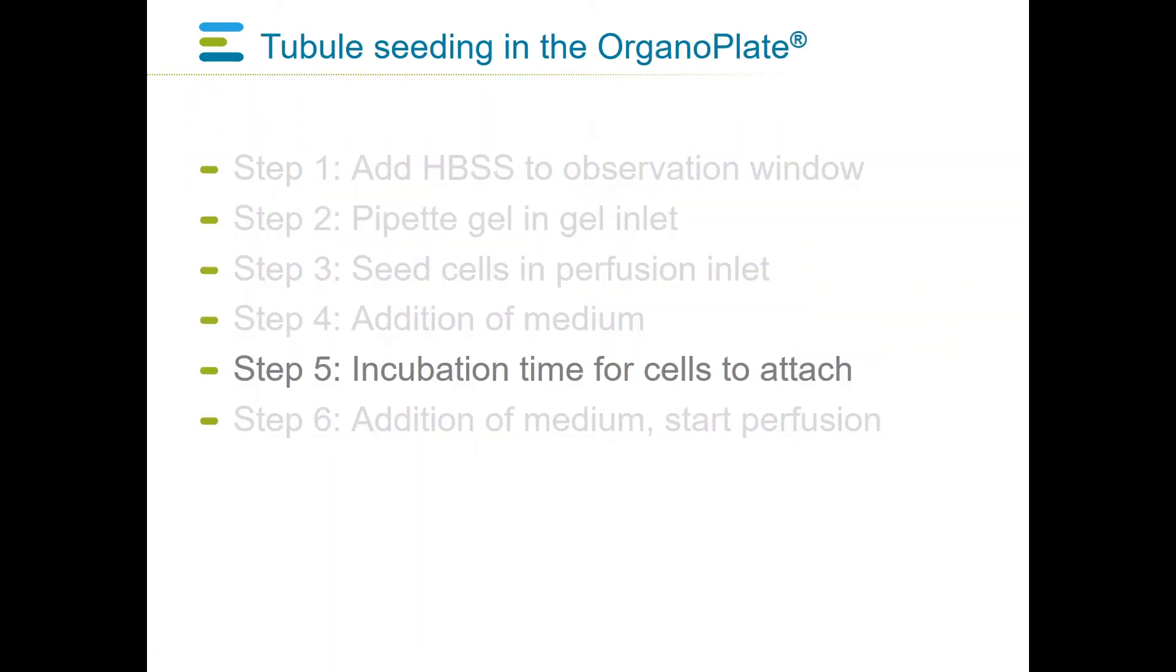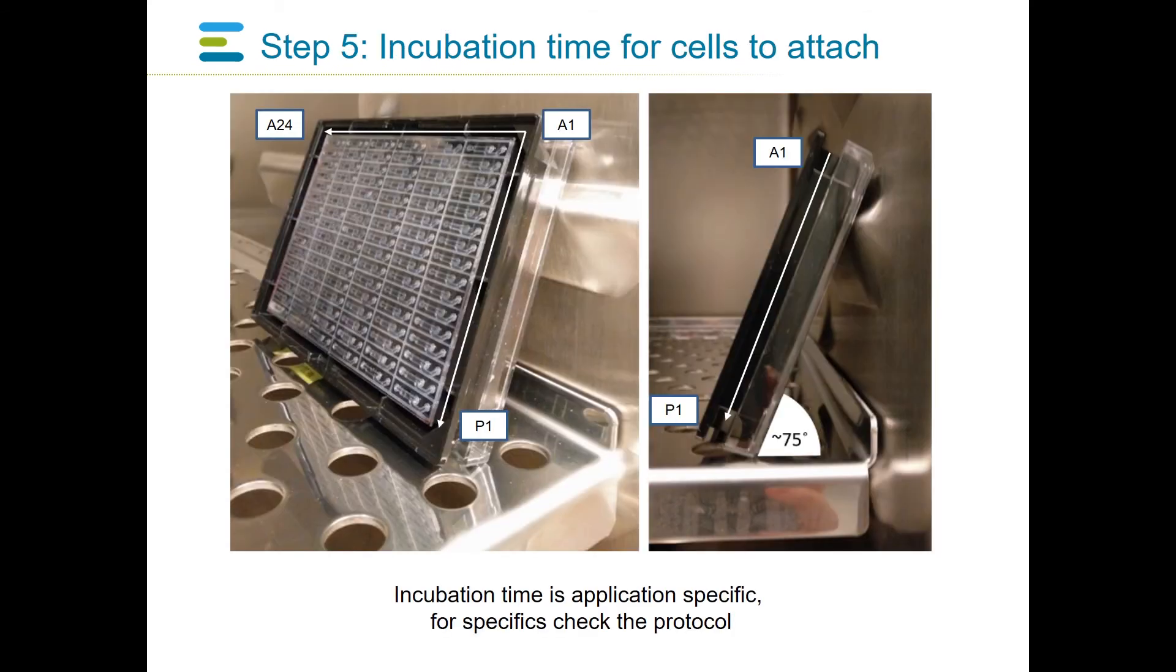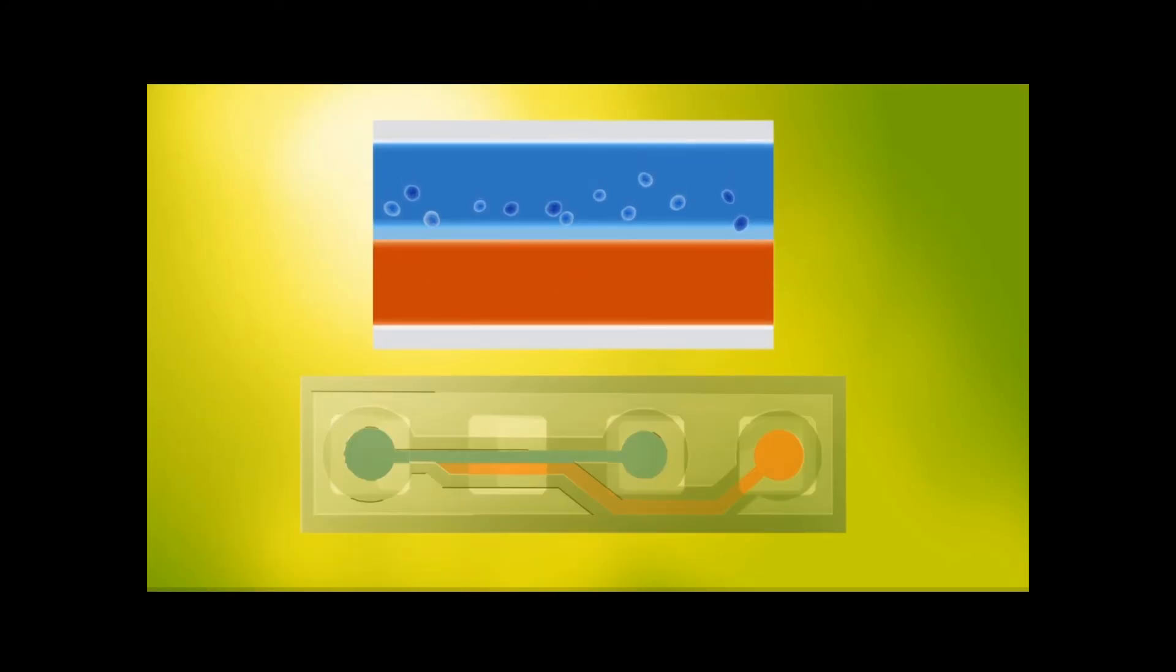In step five, the cells are allowed to settle against the gel, allowing them to attach and initiate tube formation. To allow the cells to settle against the gel, place the plate on its side against the wall of your incubator. Please note that the gel should be facing down, with the lid leaning towards the wall. At this angle, maximum contact between cells and ECM is ensured. Incubation times for proper attachment vary between cell types.